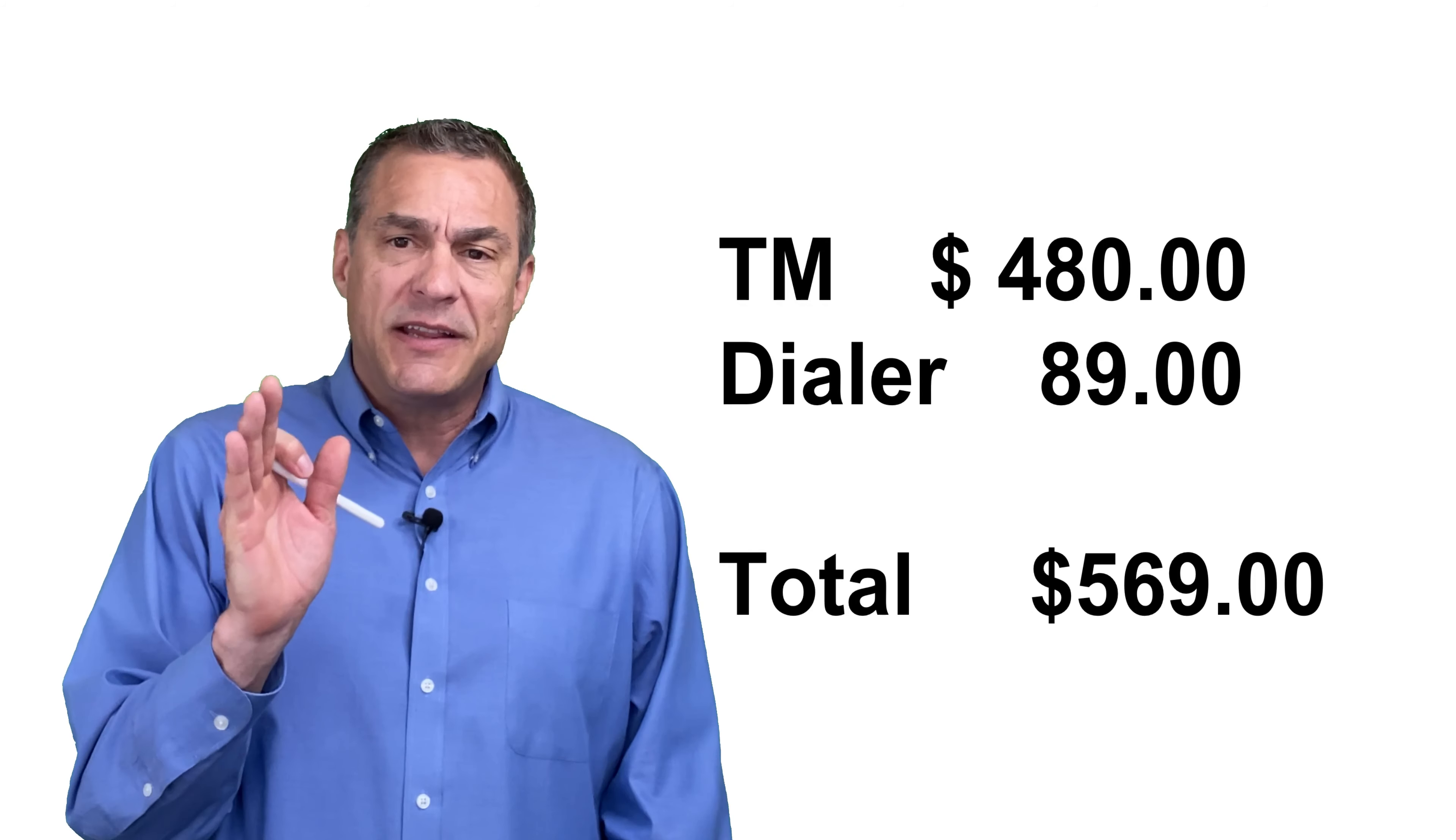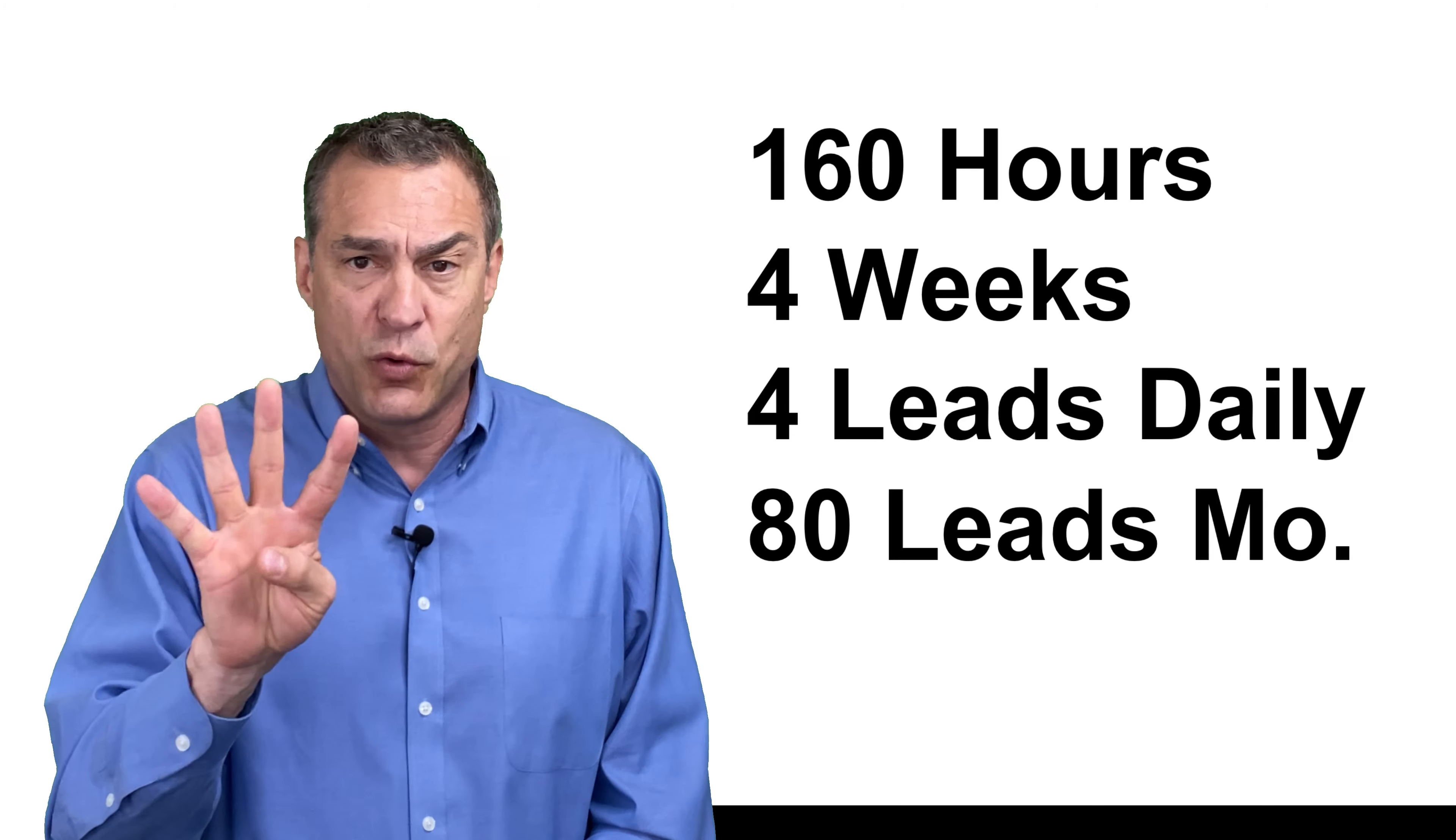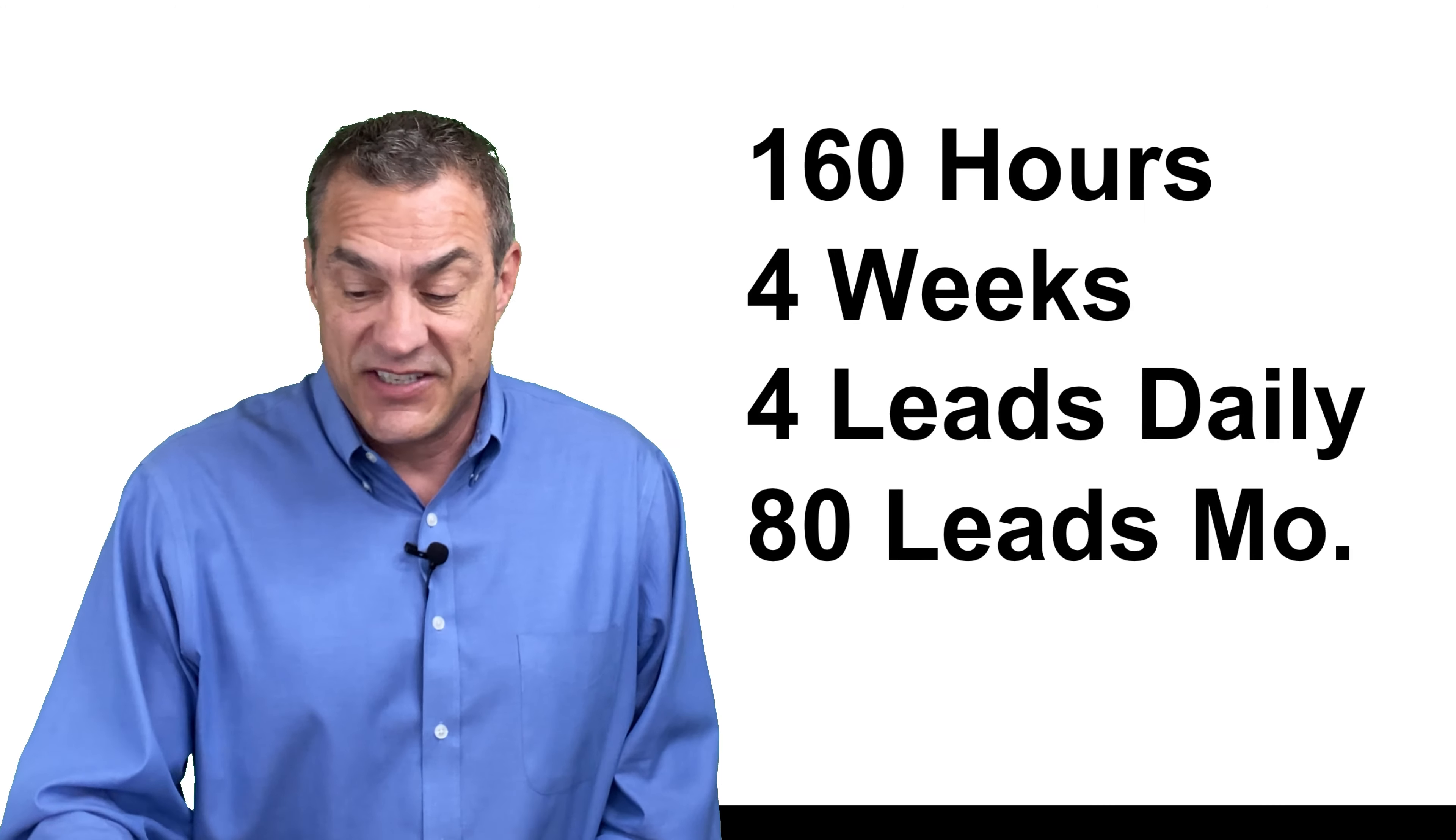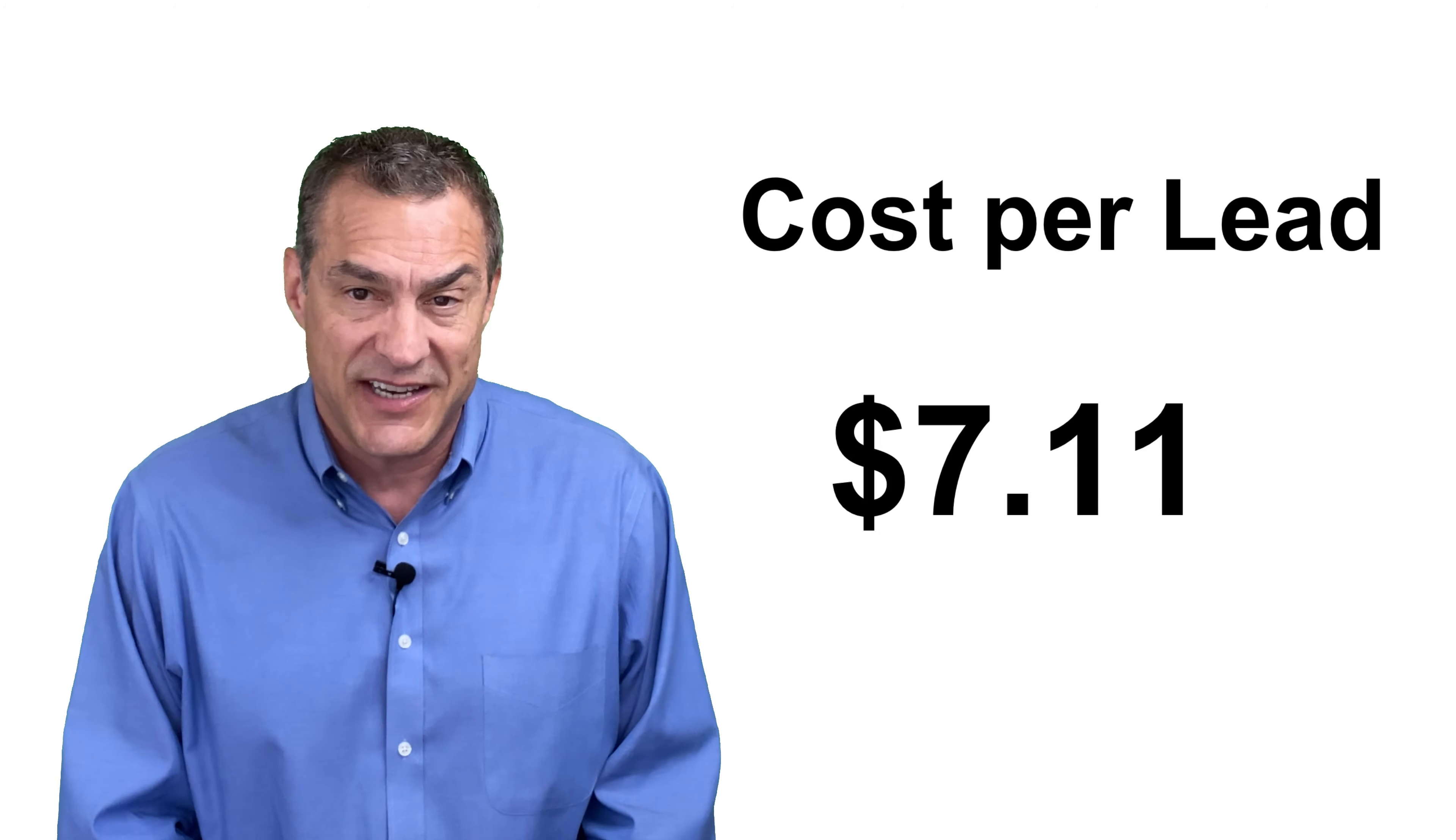So let's look at how we break down the cost per lead now. So we have 160 hours of dialing per month. That's four weeks of 40 hours per week. 160 hours of dialing. If those telemarketers generate four leads per day minimum, that's what you need to do. And if they're not doing it in one county, you just move them to another county where they can do it. That's 80 leads per month. Simple math. 80 leads breaks down. You just simply divide the $569 by 80, and you come up with $7.11 per lead.